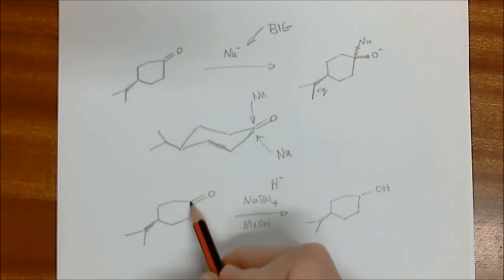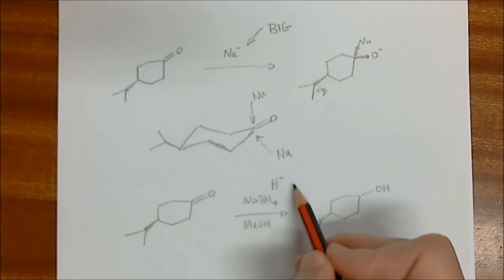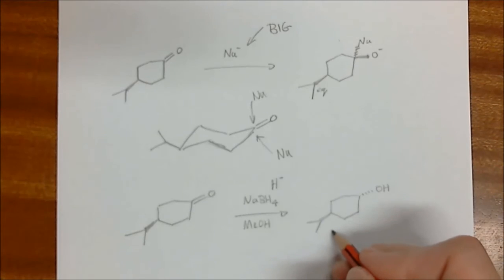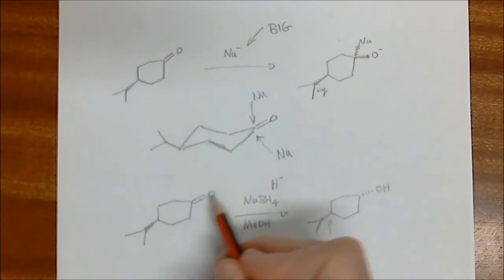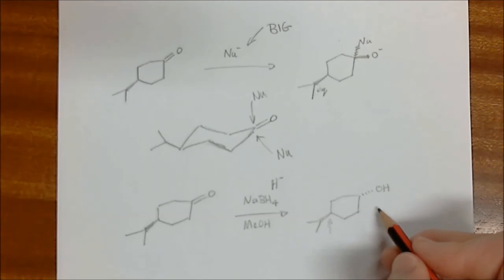So when it adds over here, because it is small, it's going to be in an axial position, and the OH it forms is in an equatorial position. So we know that this one wants to be equatorial. That's governing, that's controlling the reduction that's occurring and the stereochemistry of the product. And so we end up with that.